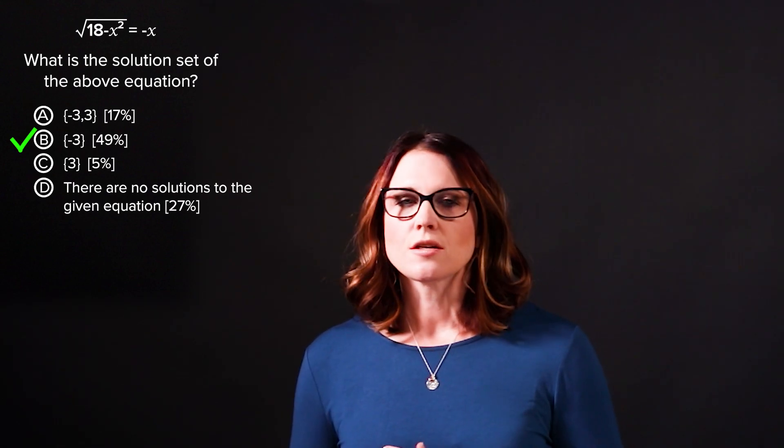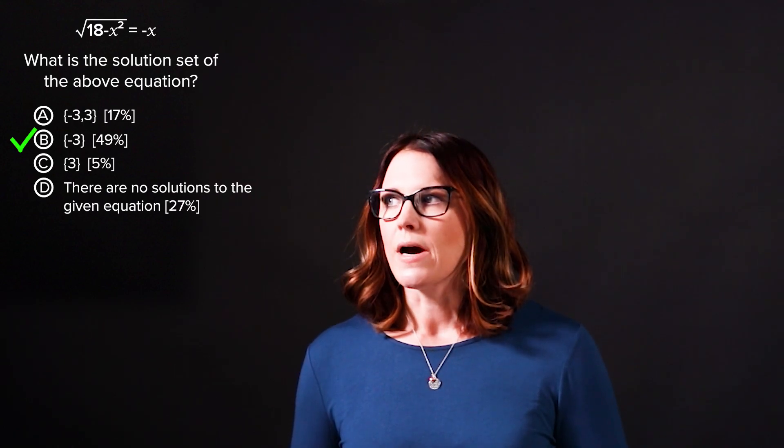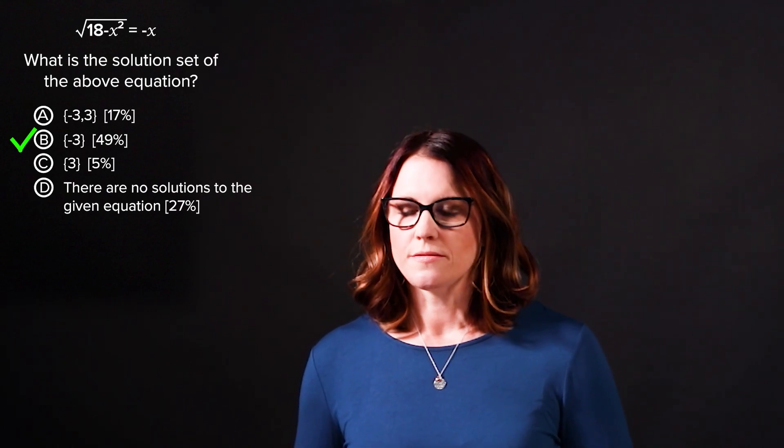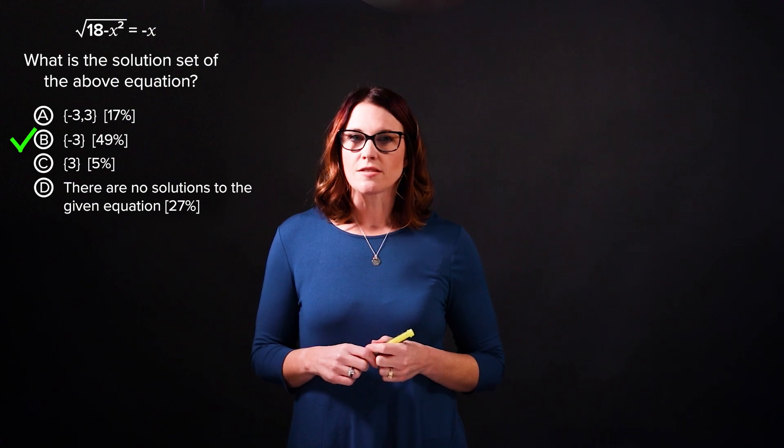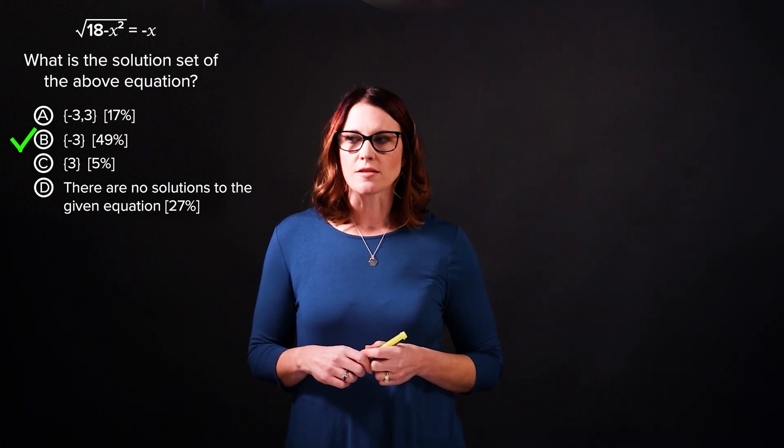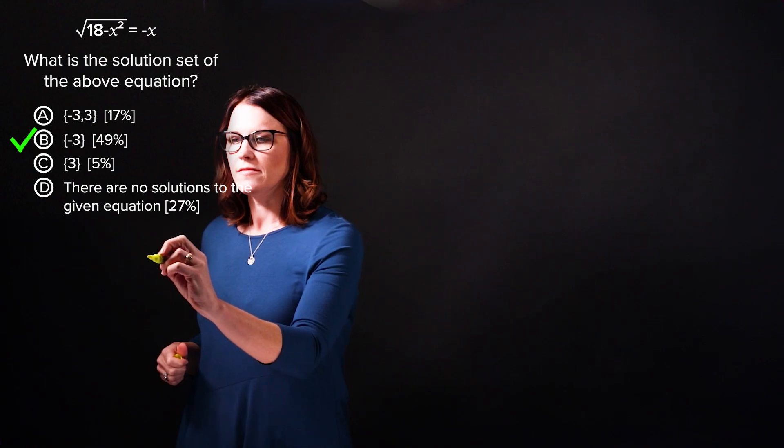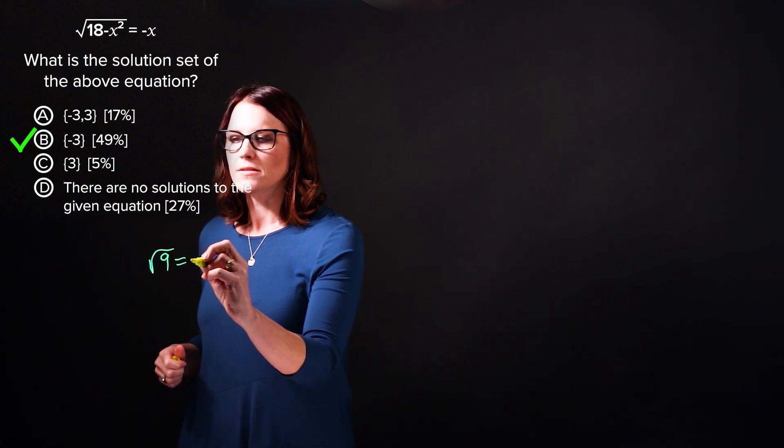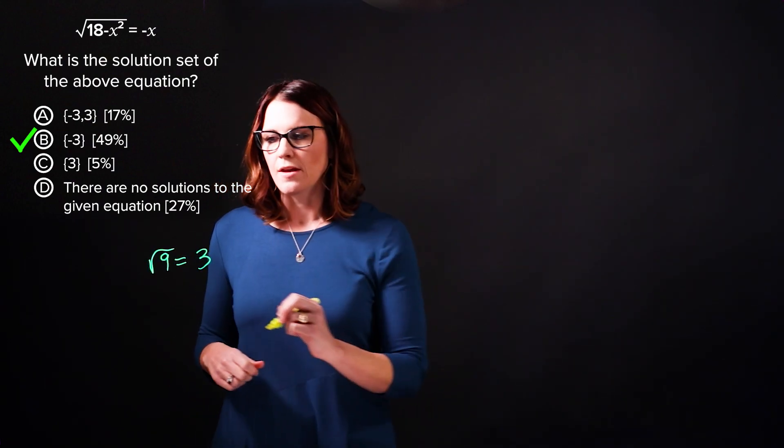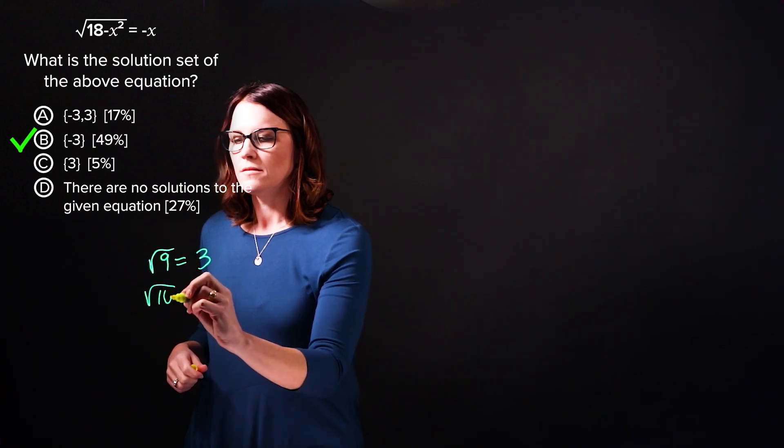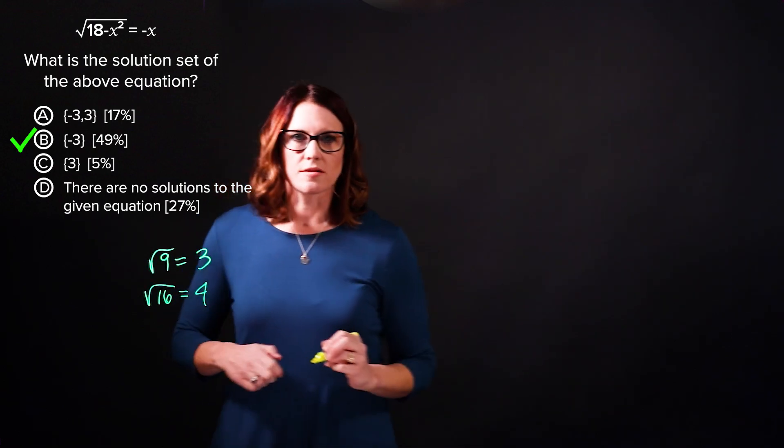So I'd like to address a common misconception that might result in this incorrect choice. The square root of a positive number is defined to be positive. So for example, the square root of 9 is equal to positive 3. The square root of 16 is equal to positive 4.